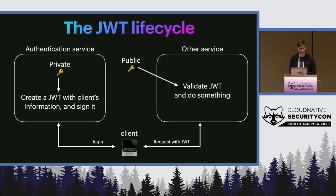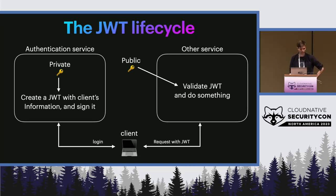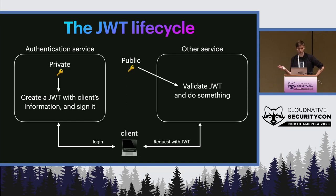Here's what this looks like in practice with a simple microservice architecture. On the left is the authentication service; on the right is some other service, say one that sends emails. Step one: the client logs into the authentication service with a username and password. The authentication service validates those credentials, creates a token for the client, and signs it with its private key. The token is sent back to the client, who then makes requests to the email service, sending that token in the request header. The email service takes the token out of the header, looks up the public key of the authentication service, validates the signature, checks the token hasn't expired, and then proceeds to send the email.